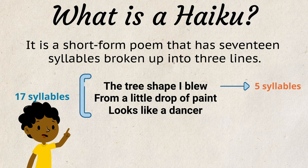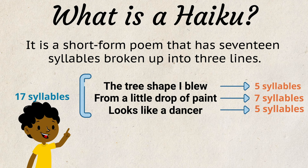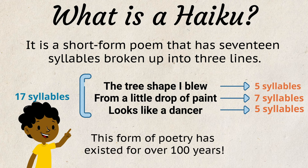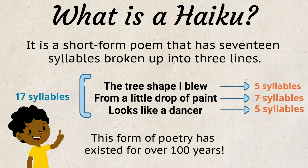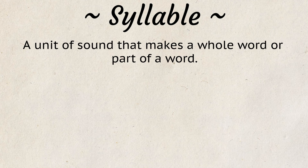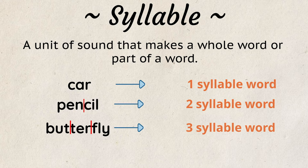The syllable structure is five, seven, five. This form of poetry has existed for over 100 years. A syllable is a unit of sound that makes a whole word or part of a word.